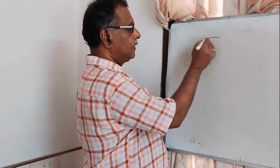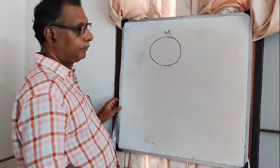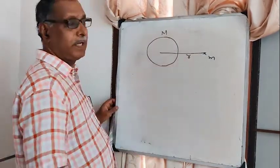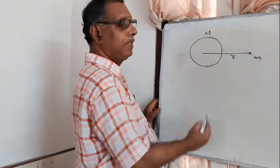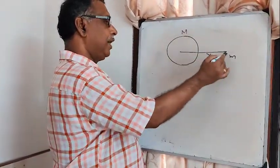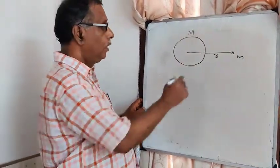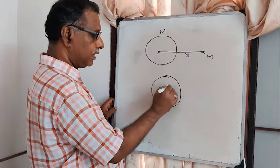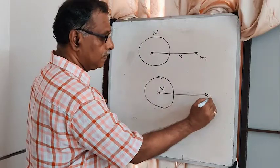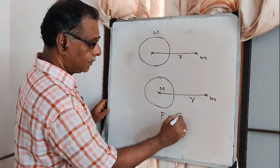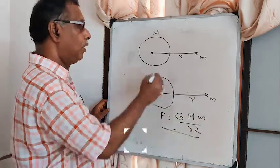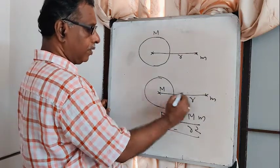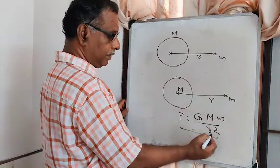If there is a spherical shell of mass M and a small mass m at a distance R from the center of the shell outside it, the whole mass M of the shell can be considered concentrated at its center. Then the force is F = G·M·m / R².